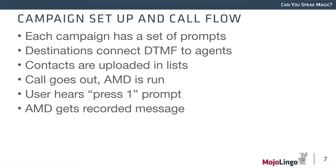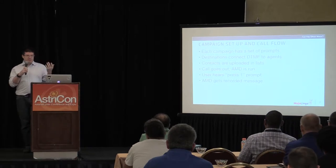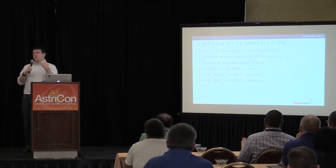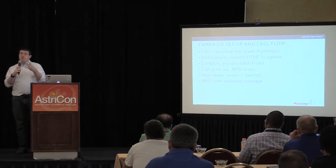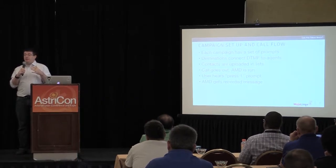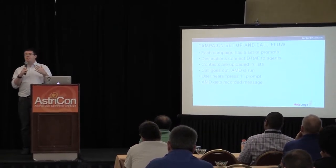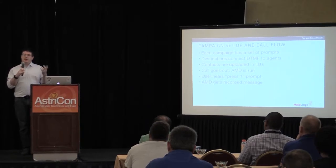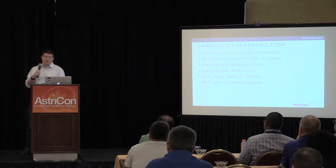Each campaign is a set of prompts. A destination means a user is connected to an agent when they press a number — you hear a message, press one if interested, and the agent is dialed. We also do answering machine detection, which was another pain point. Tuning AMD is better done with a slant — decide whether you prefer some machines detected as humans or vice versa. Getting perfect AMD is impossible, and in this case we didn't really care if the same message played to an answering machine or a human.